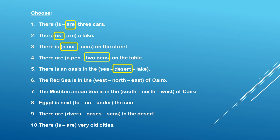Number seven: the Mediterranean Sea is in the north. Number eight: Egypt is next to the sea. Number nine: there are oases in the desert. Number ten: there are very old cities.